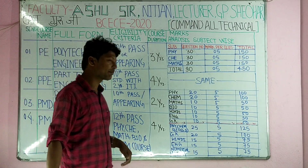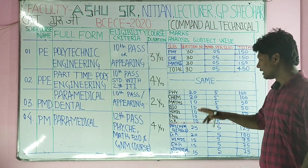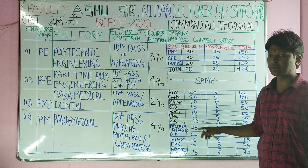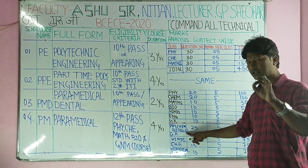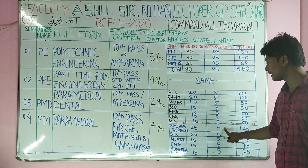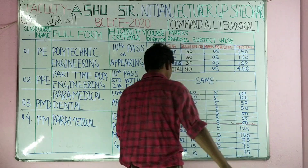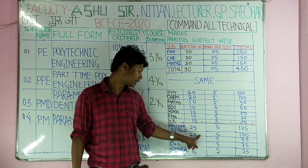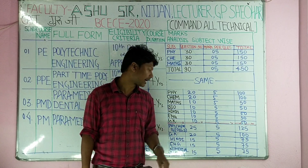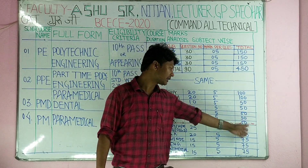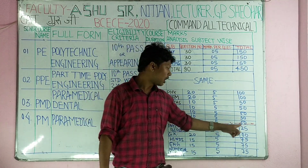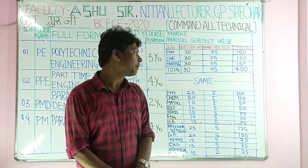The last course is Para Medical — PMC. Subjects include GS, Chemistry, and Biology. The number of questions for GS is 25 and each question is worth 25 marks. The next subject has 20 questions, Hindi has some questions, and English has 15 questions. Total questions count to 90 and total marks is 450.